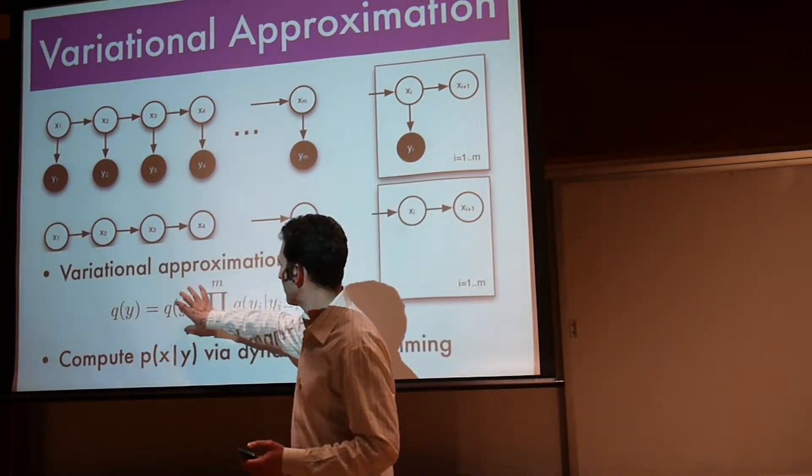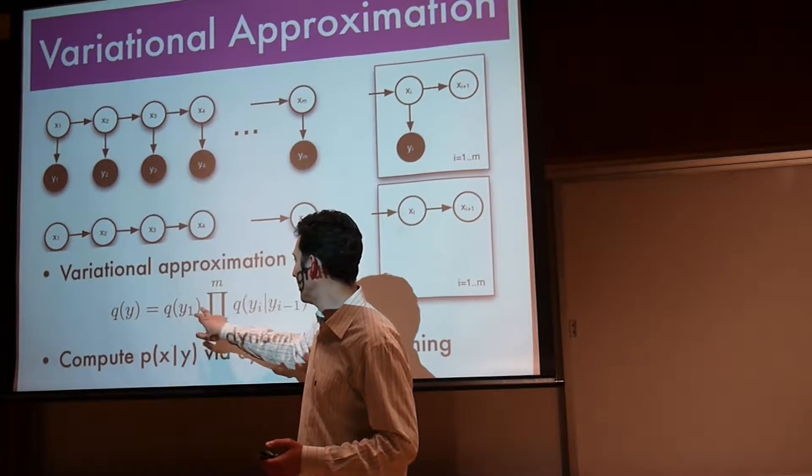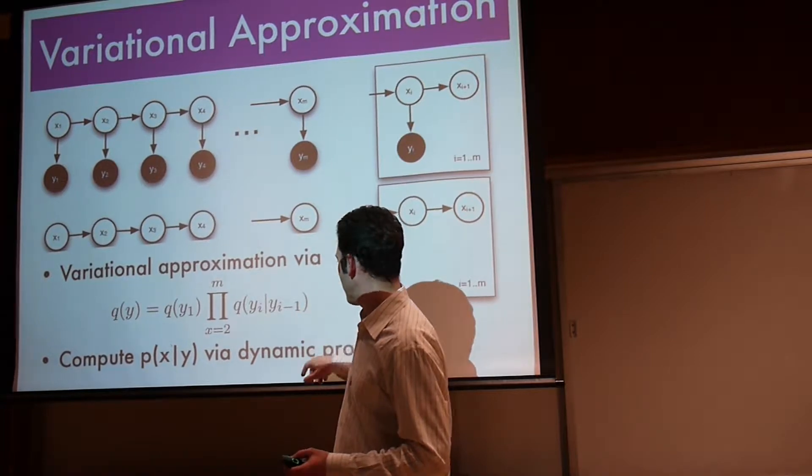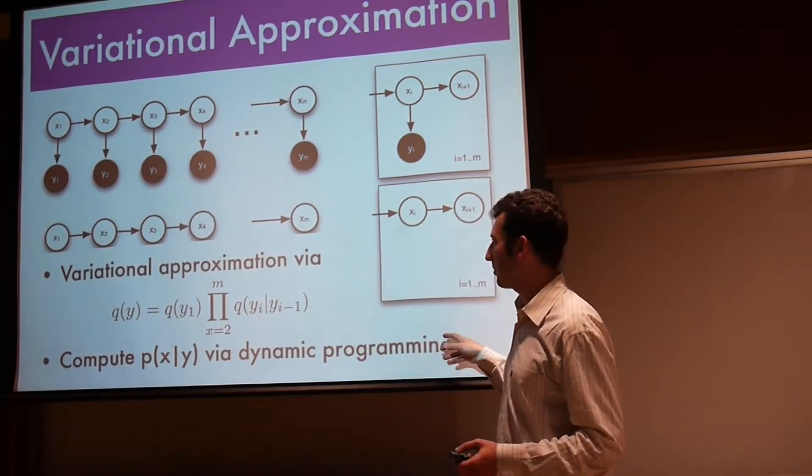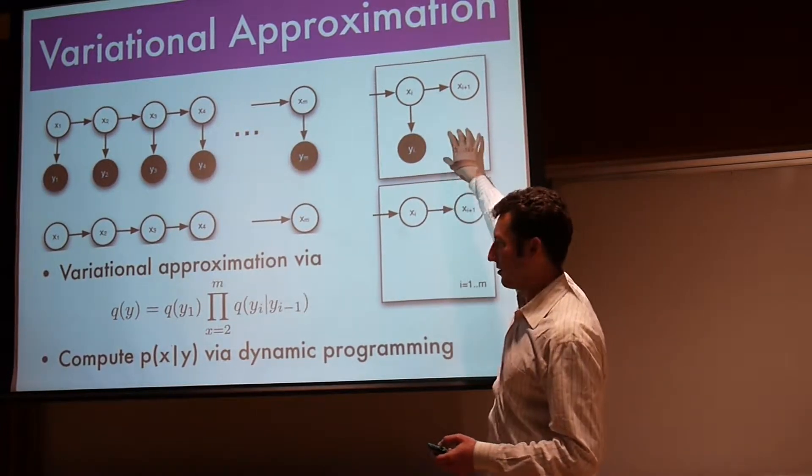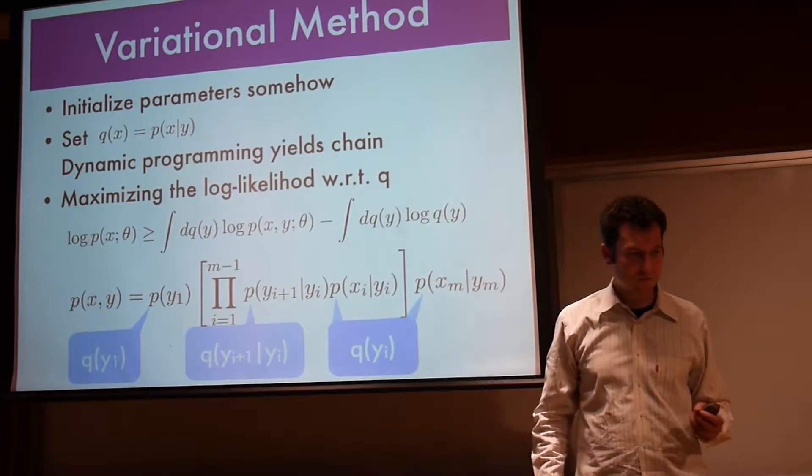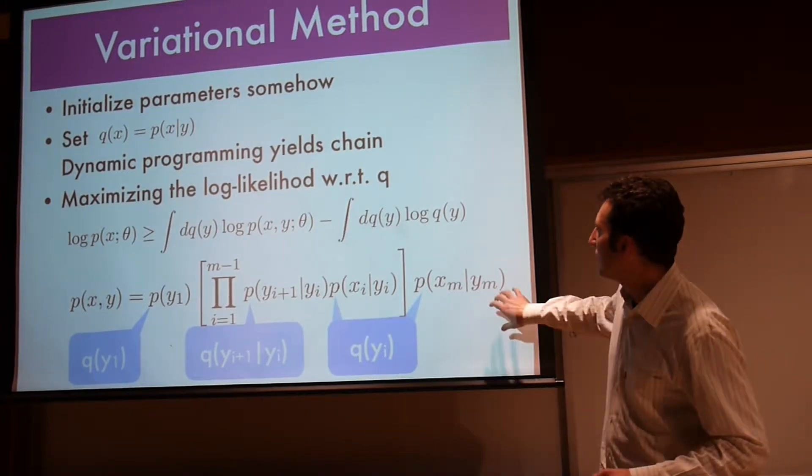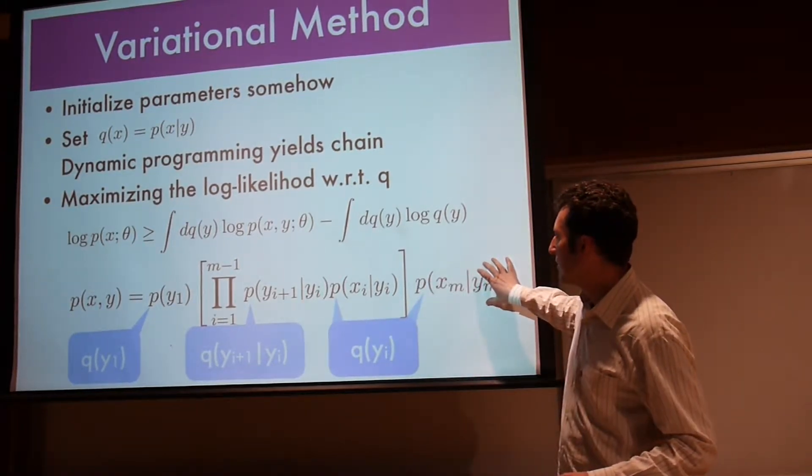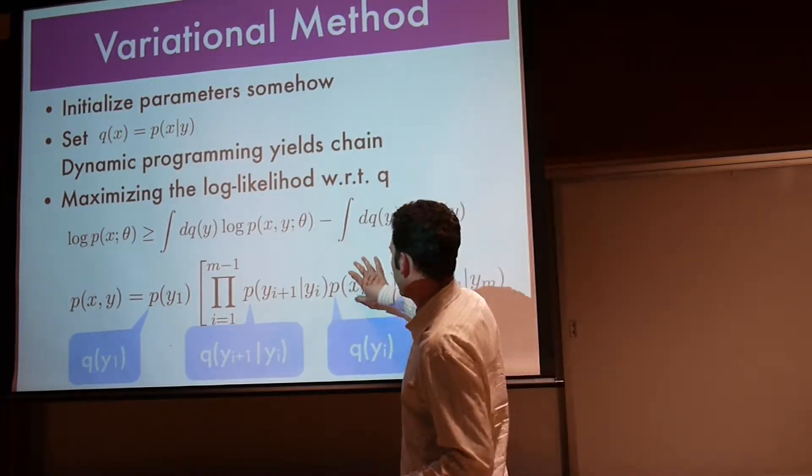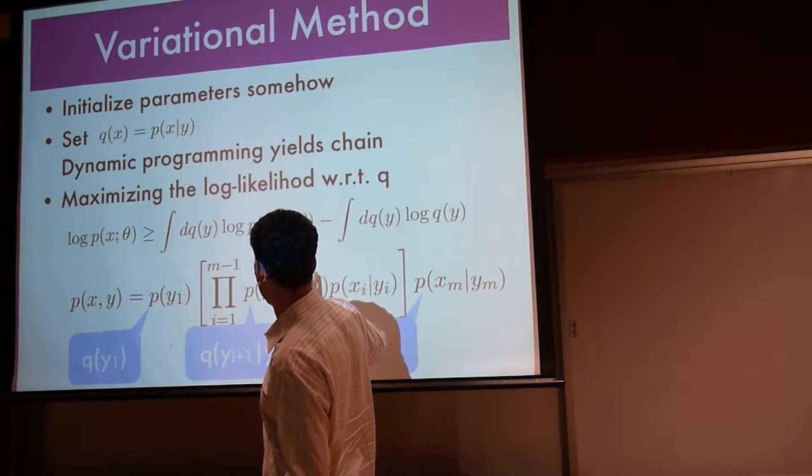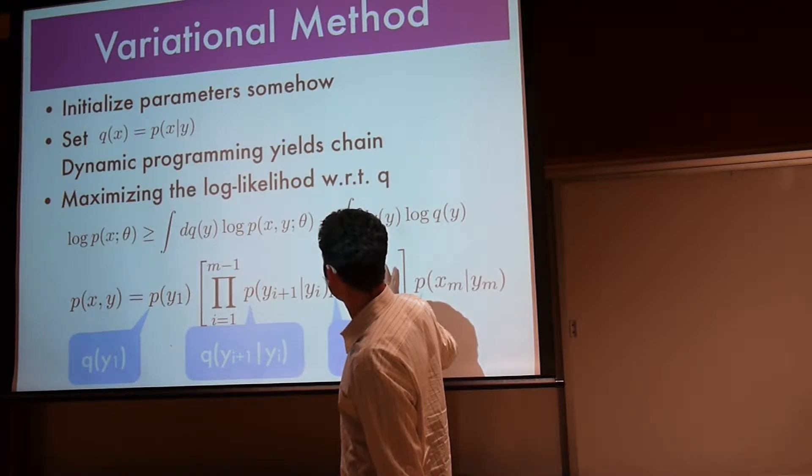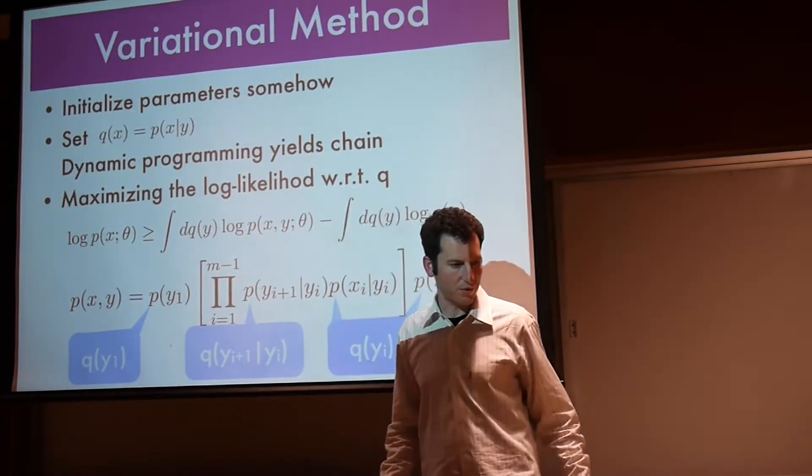The trick was equality is achieved when q of y is p of y given x. So we ratchet up by getting the q's then getting p, maximizing p of x and y under that and we iterate. So let's see what we actually can do here. This is my variational approximation: q of y is q of y1 times q of y_i given y_i-1.